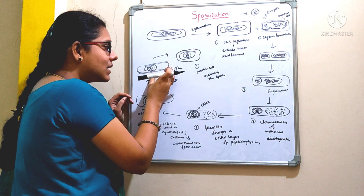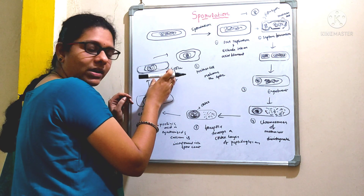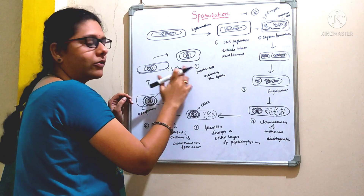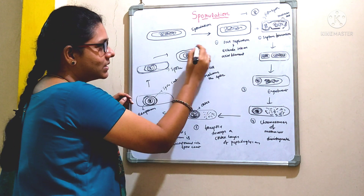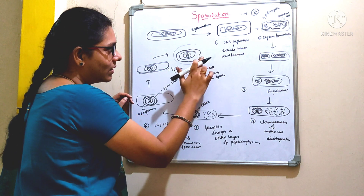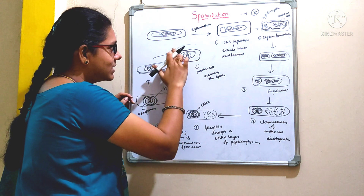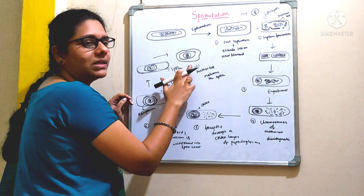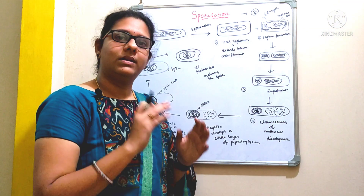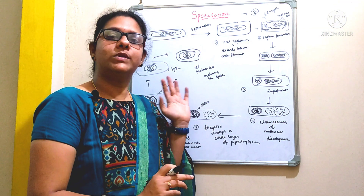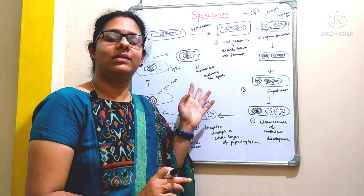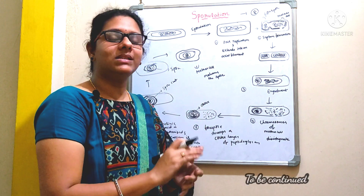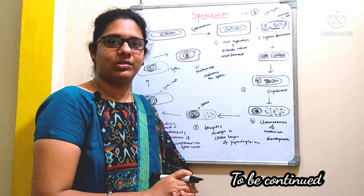When the mother cell undergoes enzymatic destruction, the spore is released out from the mother cell. This is all about the process of sporulation that takes place in the species of Bacillus. Now let us discuss about spore germination.